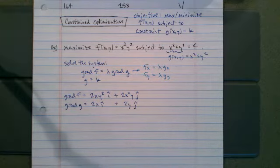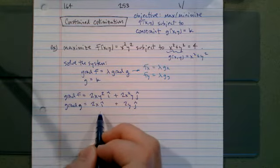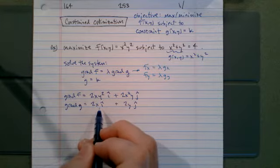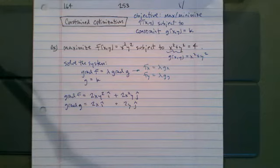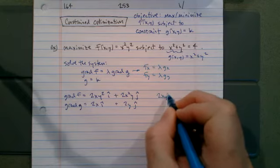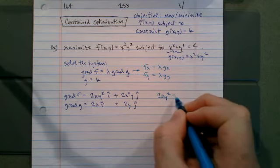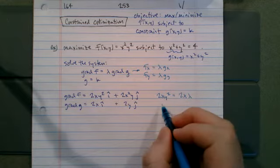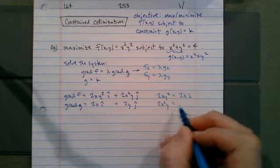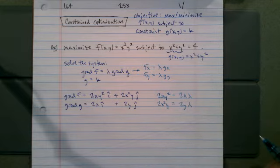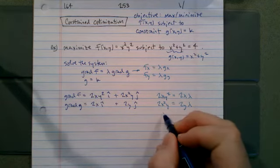So this gives us two equations where we equate the i components of gradient of f and the i component of gradient of g. This leads to 2xy squared is equal to lambda times 2x, and 2x squared y is equal to 2y times lambda.